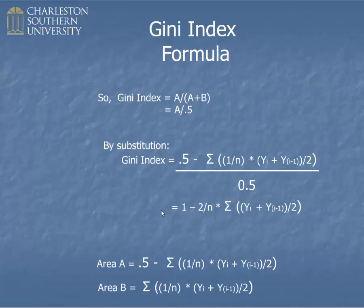This right here is the formula for the Gini index — the one that Gini himself would have used if he had laid it out mathematically. Of course, all he did was say the Gini index is the ratio of area A divided by area A plus B. I hope you found that helpful. Good luck.